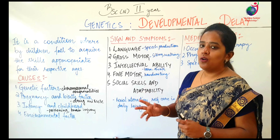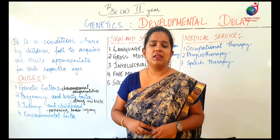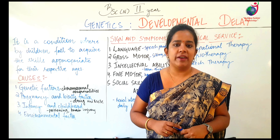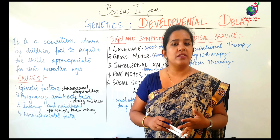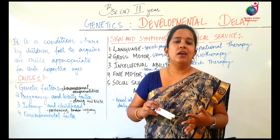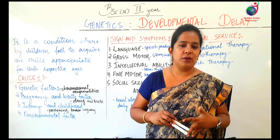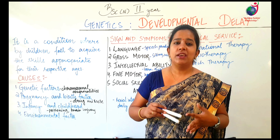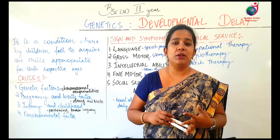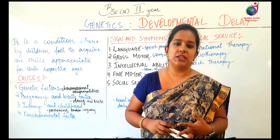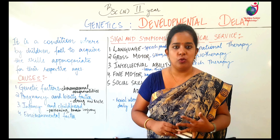What causes can it be? The main causes are genetic factors. If there is a regulatory reason or a chromosomal abnormality, then there are chances that cognitive abilities or intellectual abilities don't form properly in children.